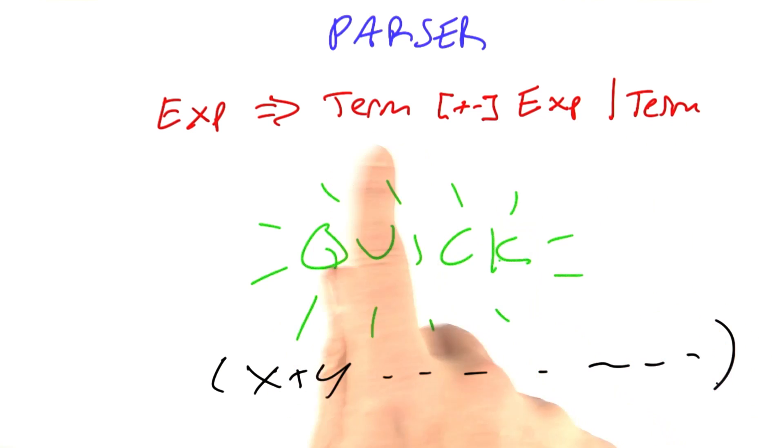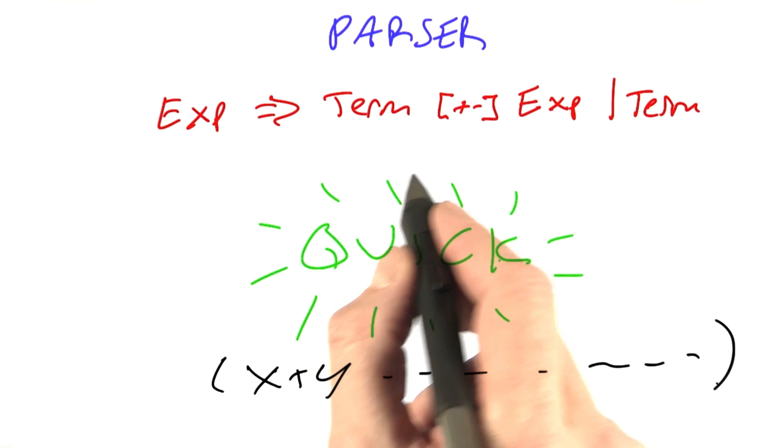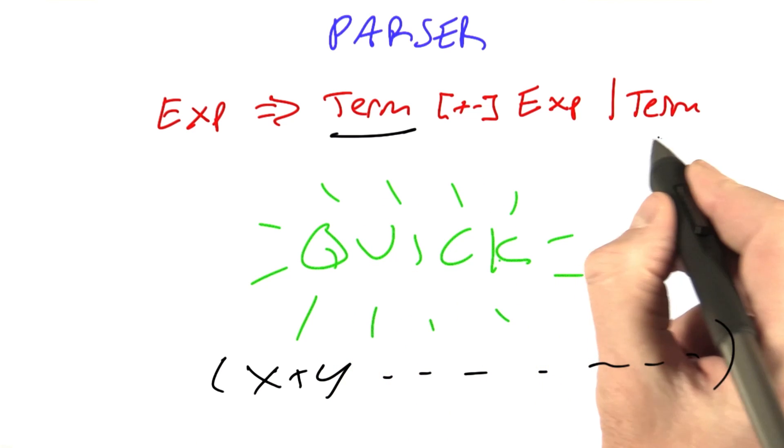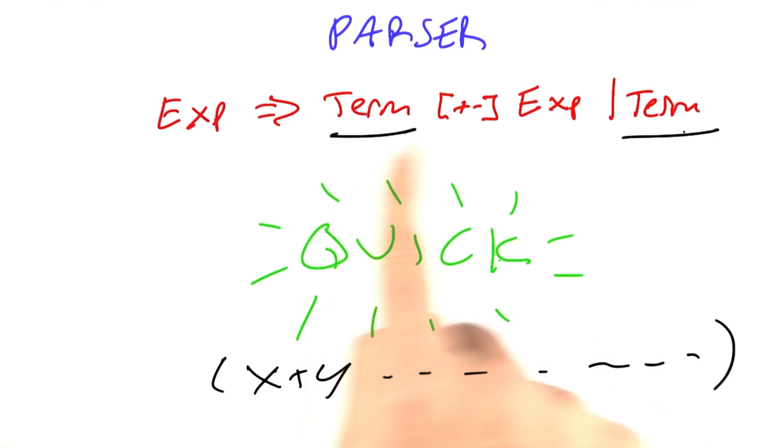So we've doubled the amount of work. And it can be worse than that because inside of each of these terms, there's more little pieces that we can be doubling each of those pieces of work. So that seems really inefficient. What we'd like to be able to do is fix up our parser so that once we've done this work, we don't have to do it a second time in case this version fails.